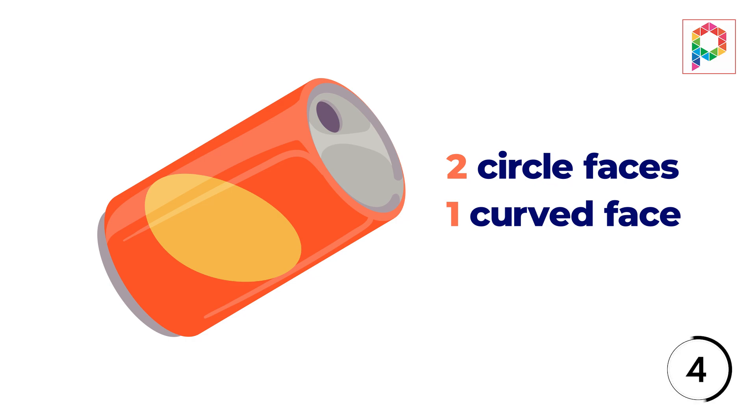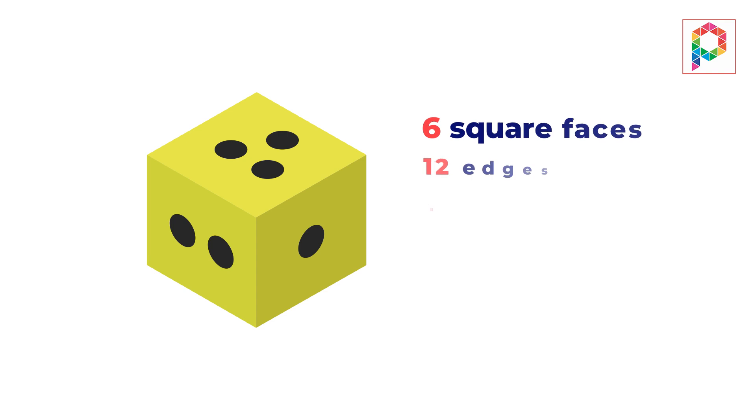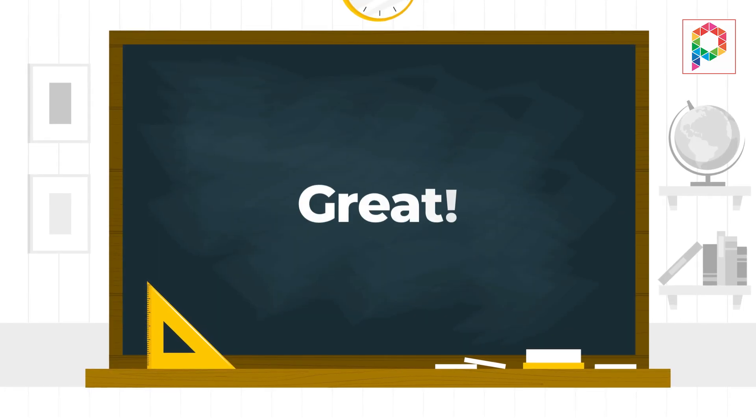A cylinder! Correct. What about this one? Six square faces, twelve edges, and eight vertices? A cube! Great! Shapes are everywhere.